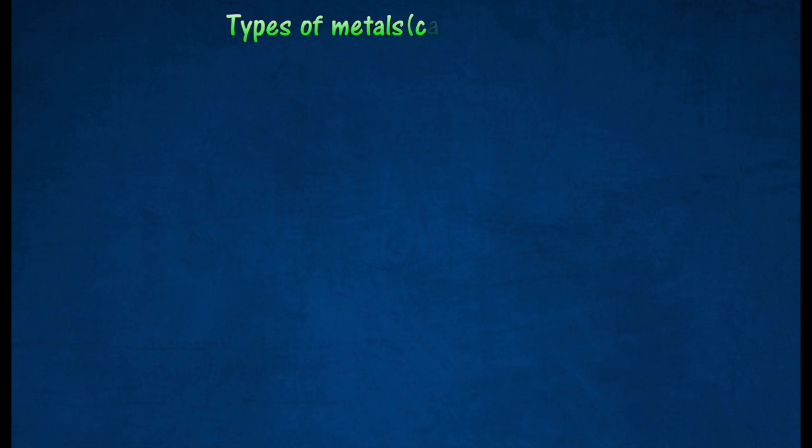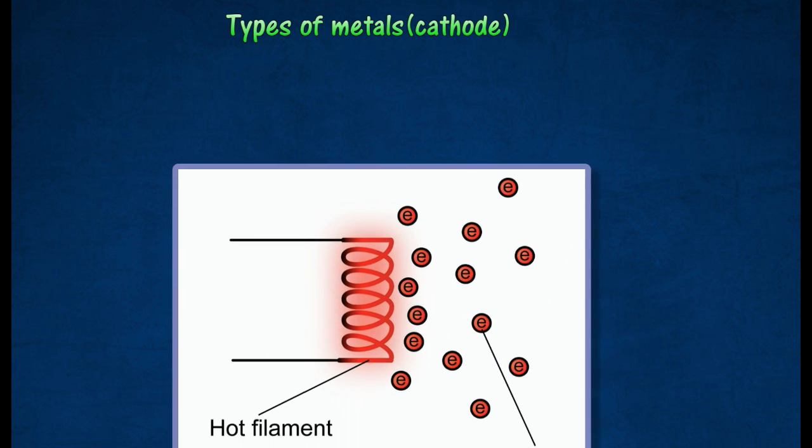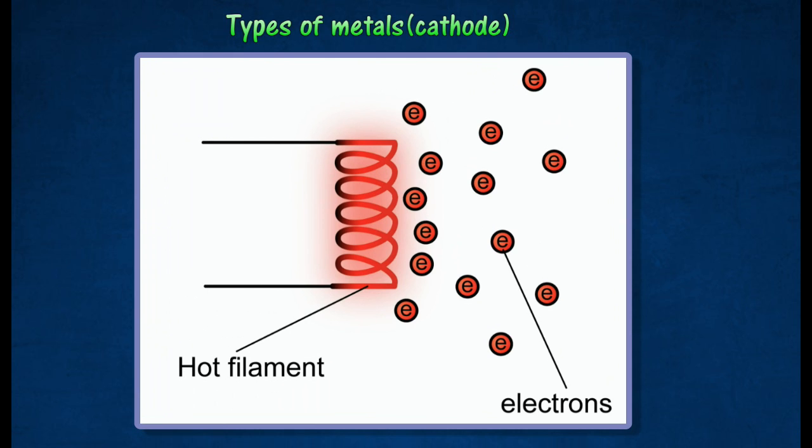The rate of thermionic emission differs with regard to different types of metals. Different metals require different amounts of energy to release electrons.